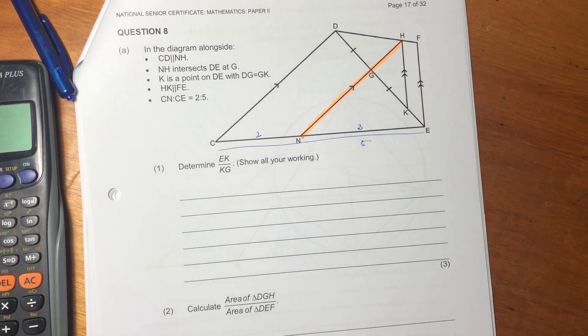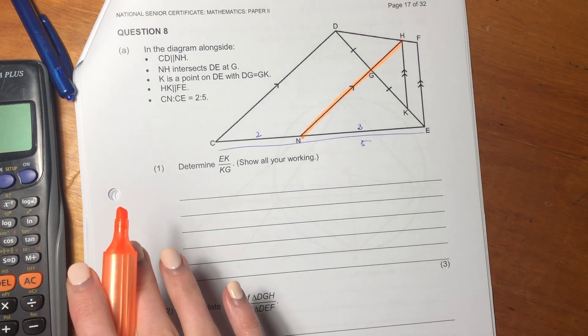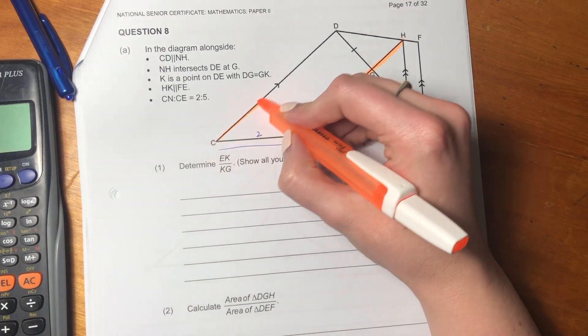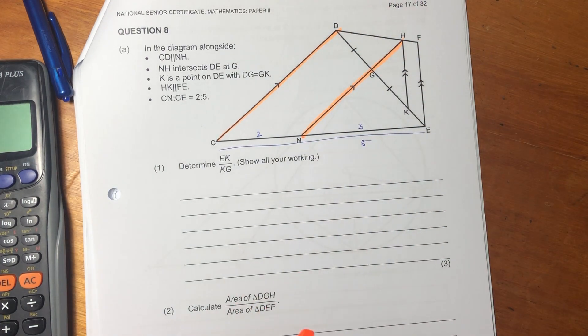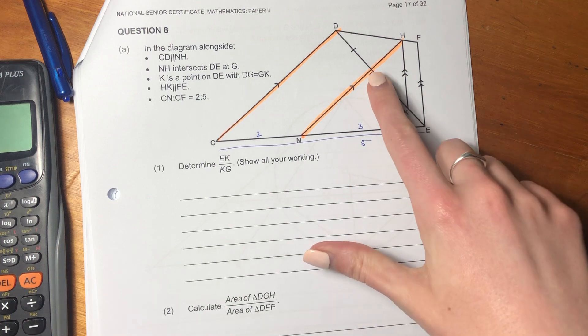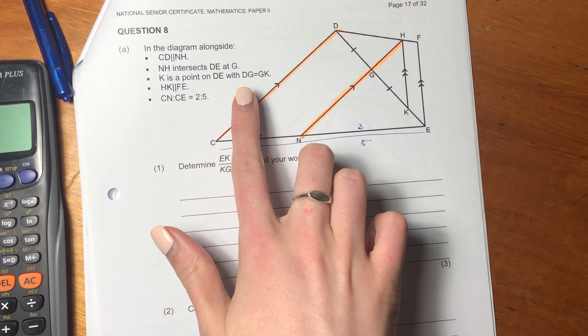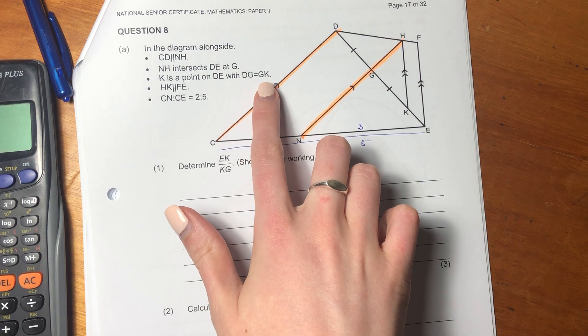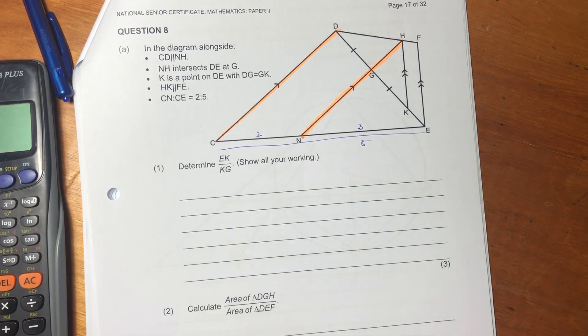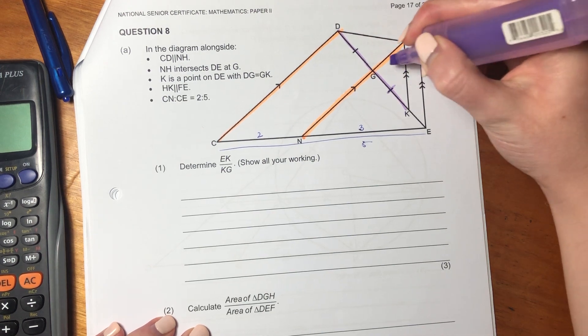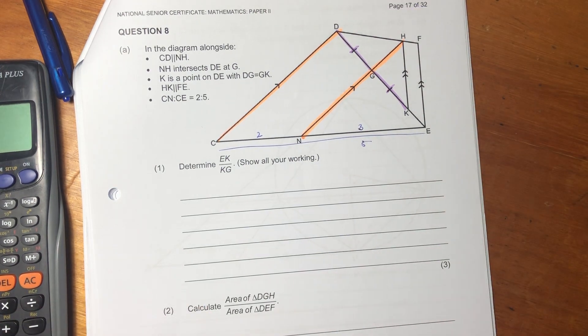Let's see what this diagram is telling us. So it says, in the diagram alongside, CD is parallel to NH. So I'm just using an orange highlighter to show that. It says NH intersects DE at G. Then it says K is a point on DE with DG equaling GK. So basically, this guy here is equal to this guy here. And they've given an indication of that by using that little sign.